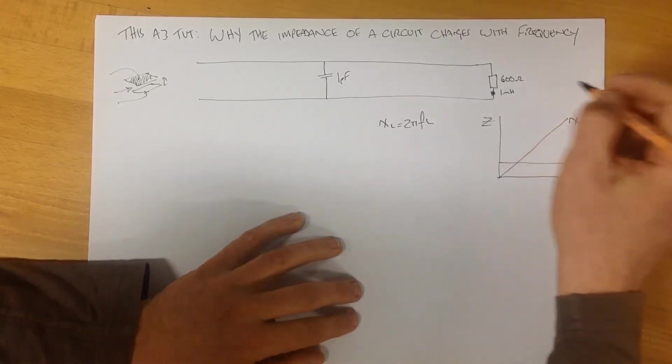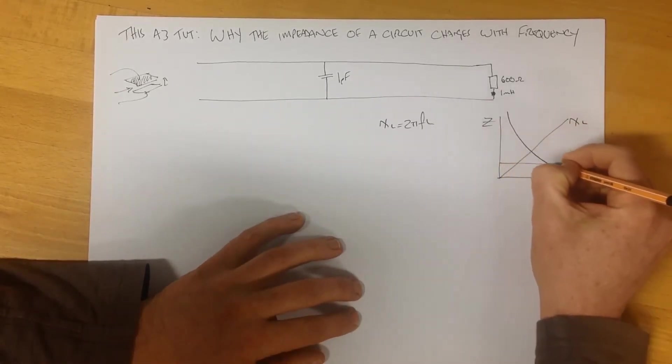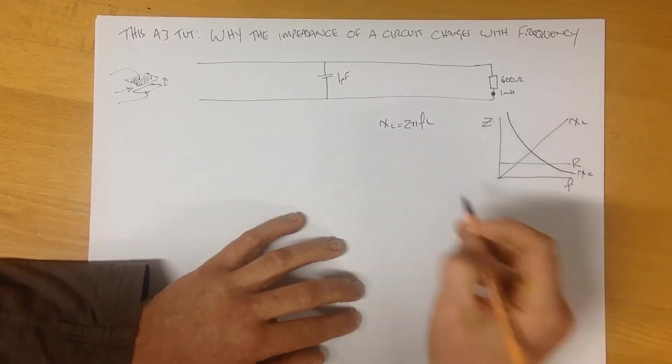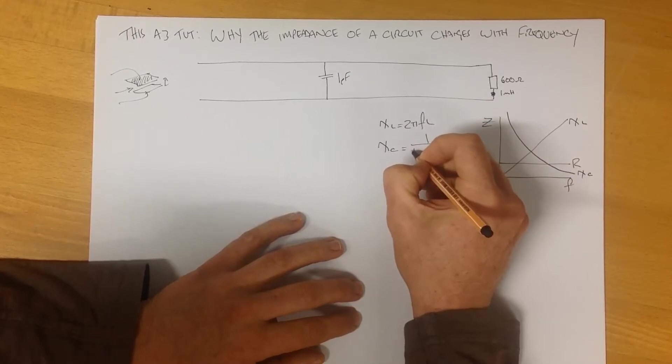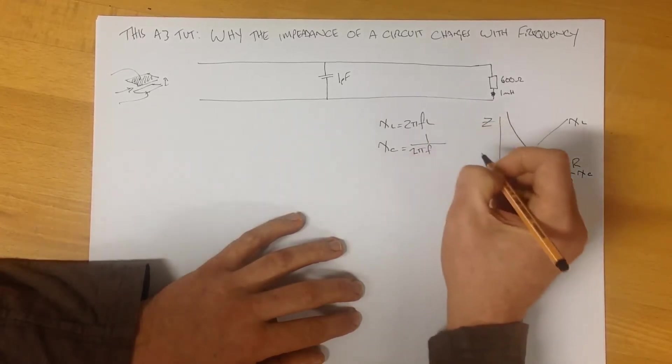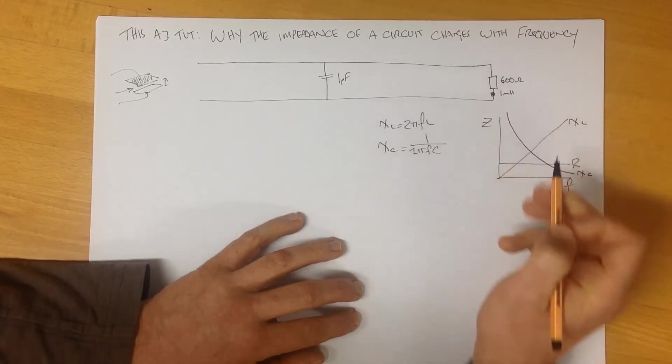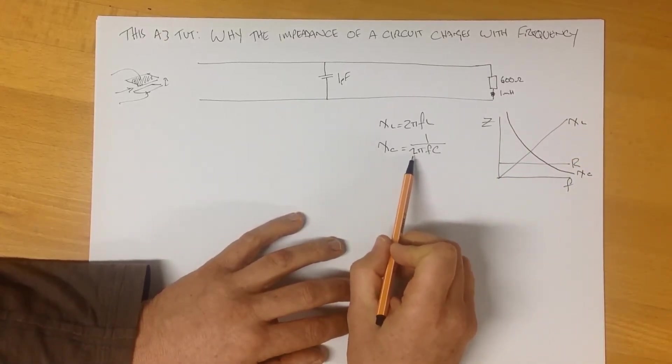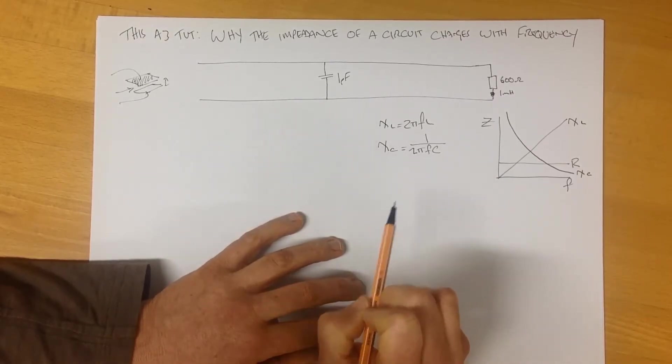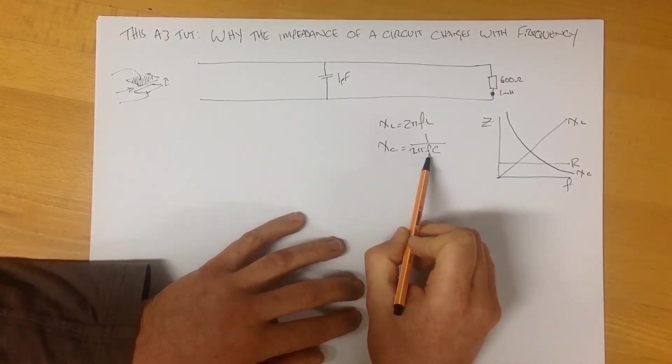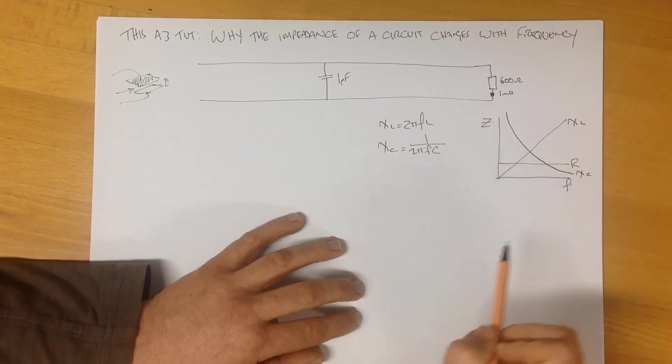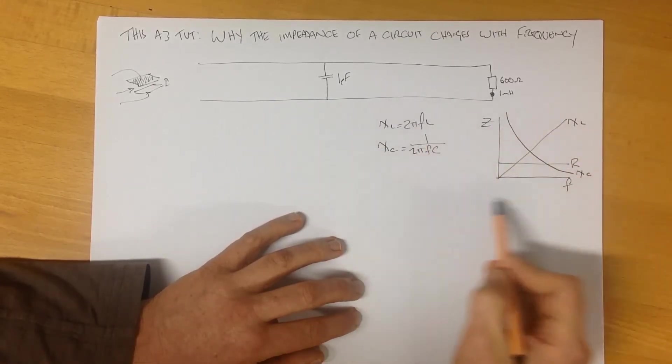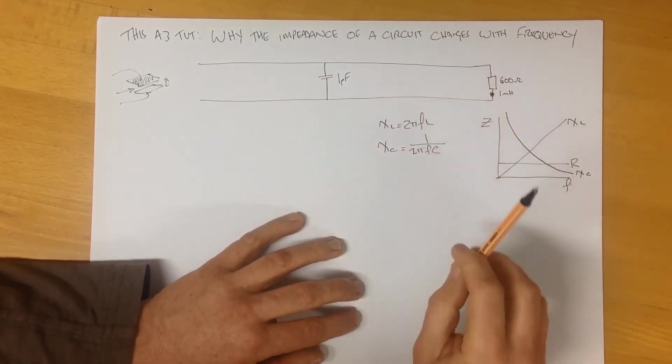The other important thing to consider is this relationship here, which is our capacitive reactance. And the expression for capacitive reactance is 1 over 2πfC. So we can see here, again, the value of 2 doesn't change, the value of π doesn't change, the value of our capacitance doesn't change. What does change? Our value of frequency, which is inversely proportional to our capacitive reactance. And here we have this expression here. So if we bear this in mind, we will then find out why the impedance changes.